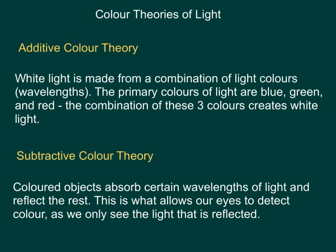The additive color theory tells us that white light is made from a combination of light colors, in other words, wavelengths. The primary colors of light are blue, green, and red. If you're an art student especially, you'll be familiar with primary colors for pigment — you need to try to forget what you know and relearn these primary colors as a separate thing.